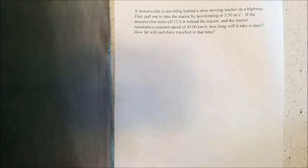The motorcycle is traveling 12 meters behind the tractor and decides to pass them accelerating at 3.50 meters per second squared. Both of them were traveling at 45.00 kilometers per hour and the tractor in this problem maintains that constant speed while the motorcycle passes it.